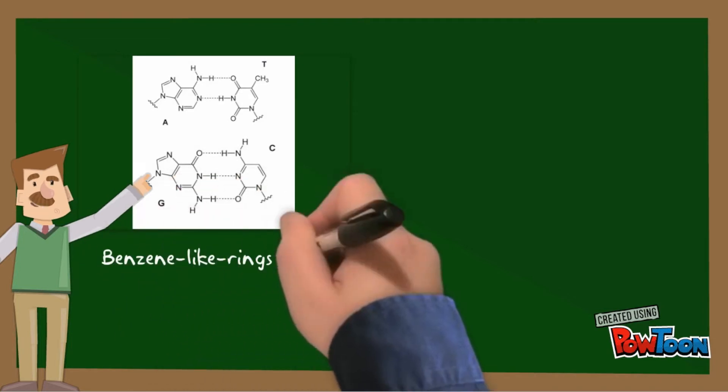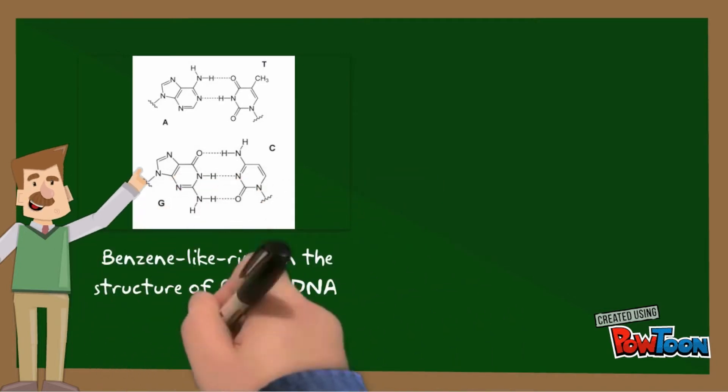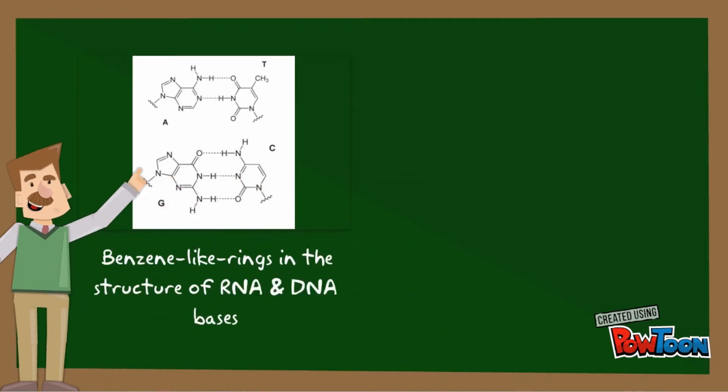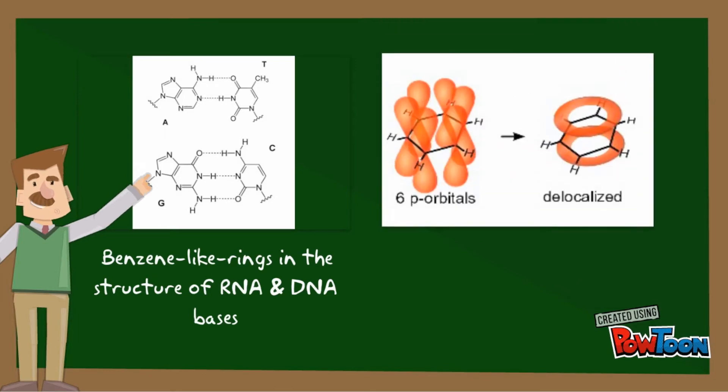Well how do they work? UV absorbent spectrophotometry takes advantage of the unique nucleotide structures of RNA and DNA. They all contain benzene-like ring structures that have an alternating single and double bond. But to understand the absorbance, we have to go even smaller to the electron orbitals of the carbon atoms.